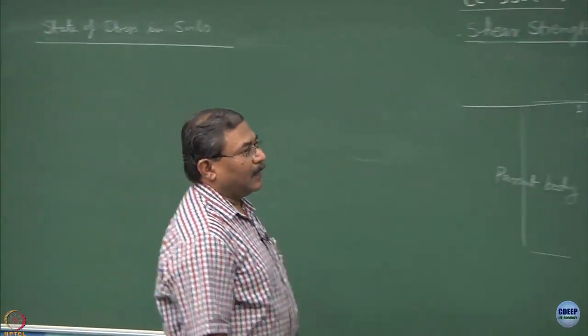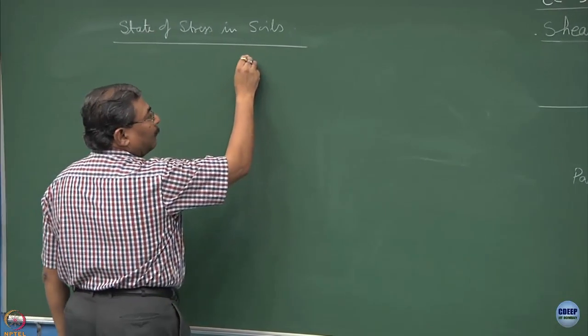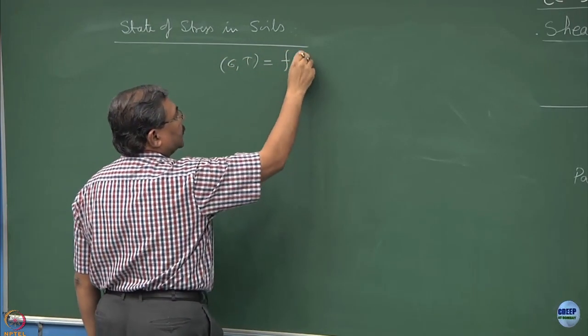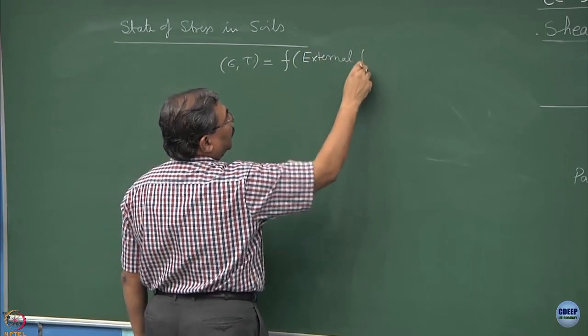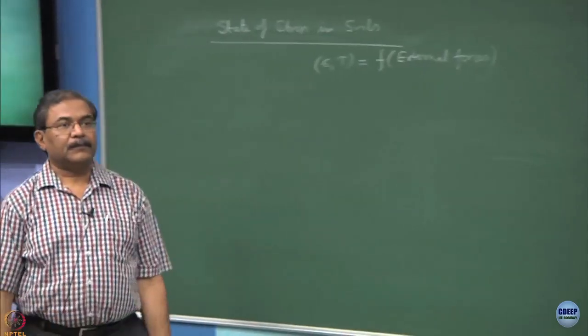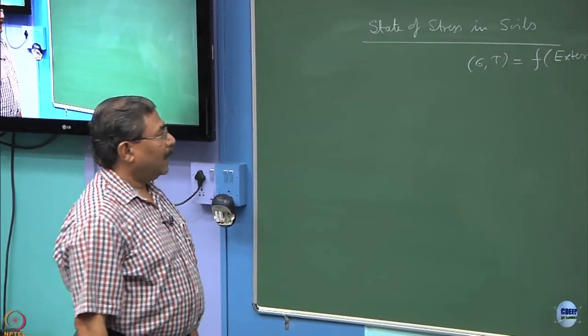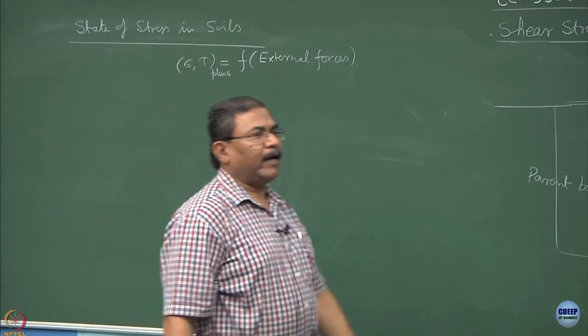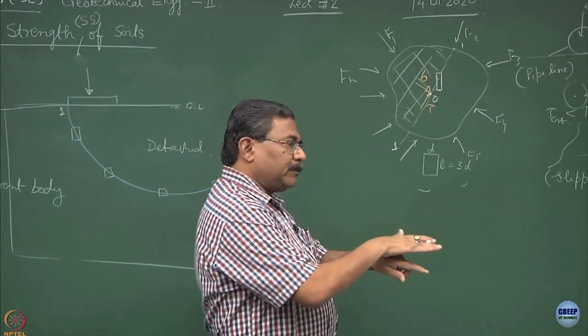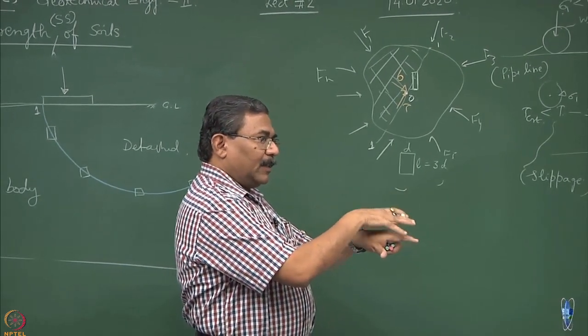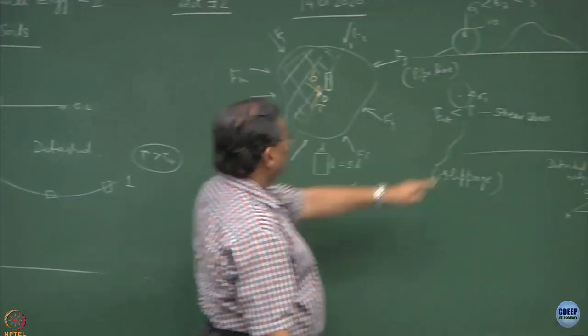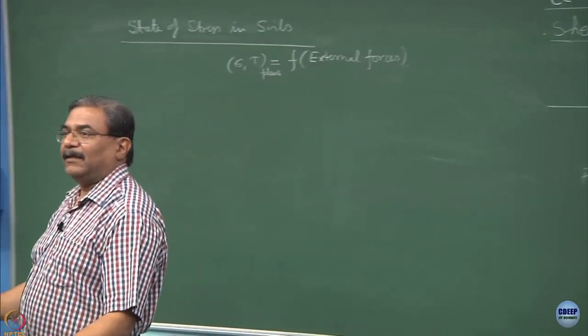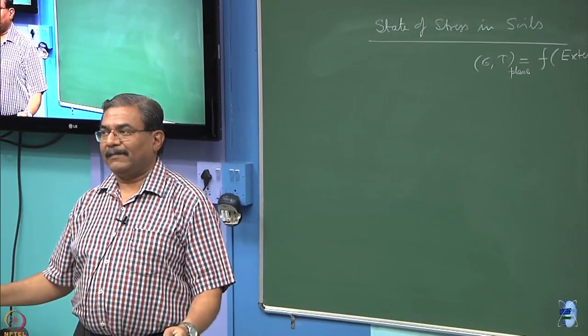The question number one is when we say state of stress in soils, can we find out sigma and tau as a function of external forces? And this sigma and tau is always on a plane. Because I am interested in understanding the detachment of a block from the parent body. And this plane gets created because of the criticality which we are talking about in the soil mass. And the condition is each and every point within the soil mass is going to be critical in the soil simultaneously.